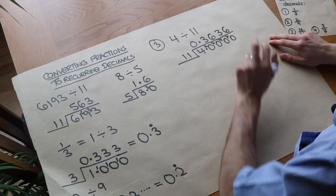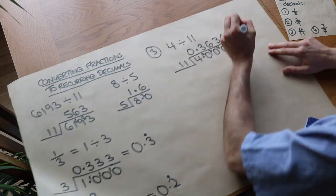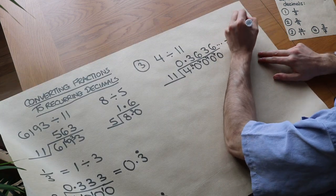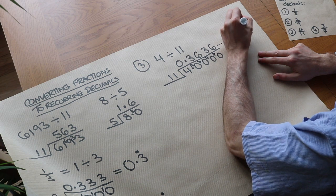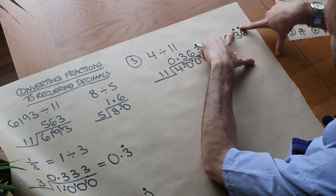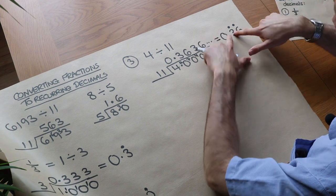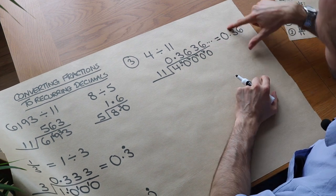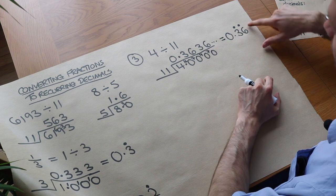Because these remainders are going 4, 7, 4, 7, 4, 7. So we can write that as 0.36 with the recurring dots on the 3 and the 6. And that means we repeat everything between those two dots. So it goes 3, 6, and then it goes back to the first dot. 3, 6, back to the first dot. 3, 6.